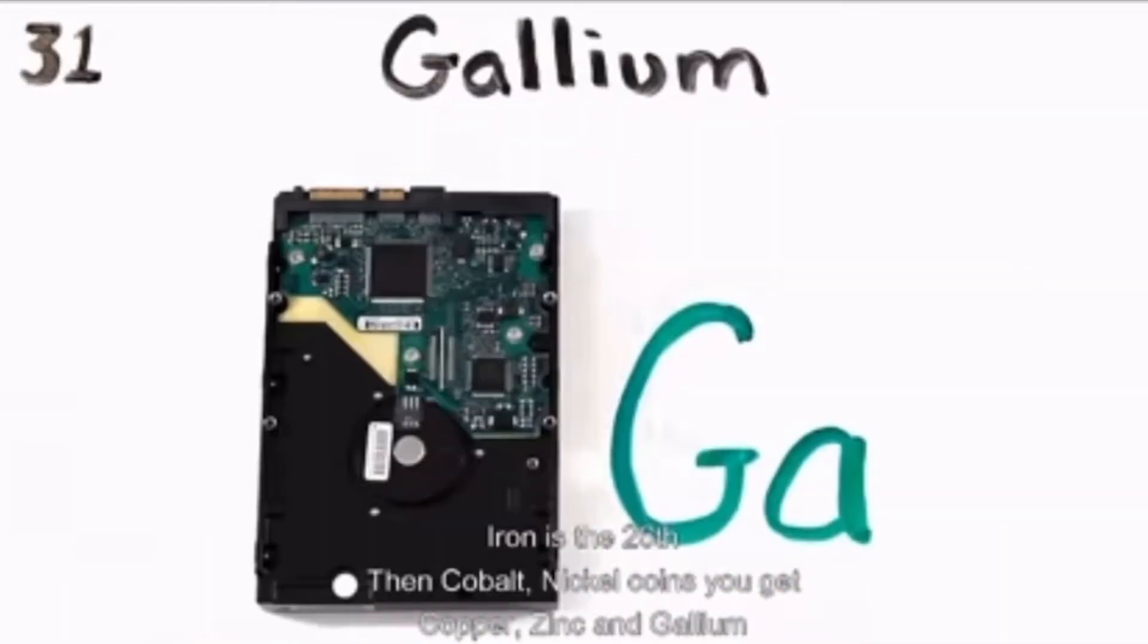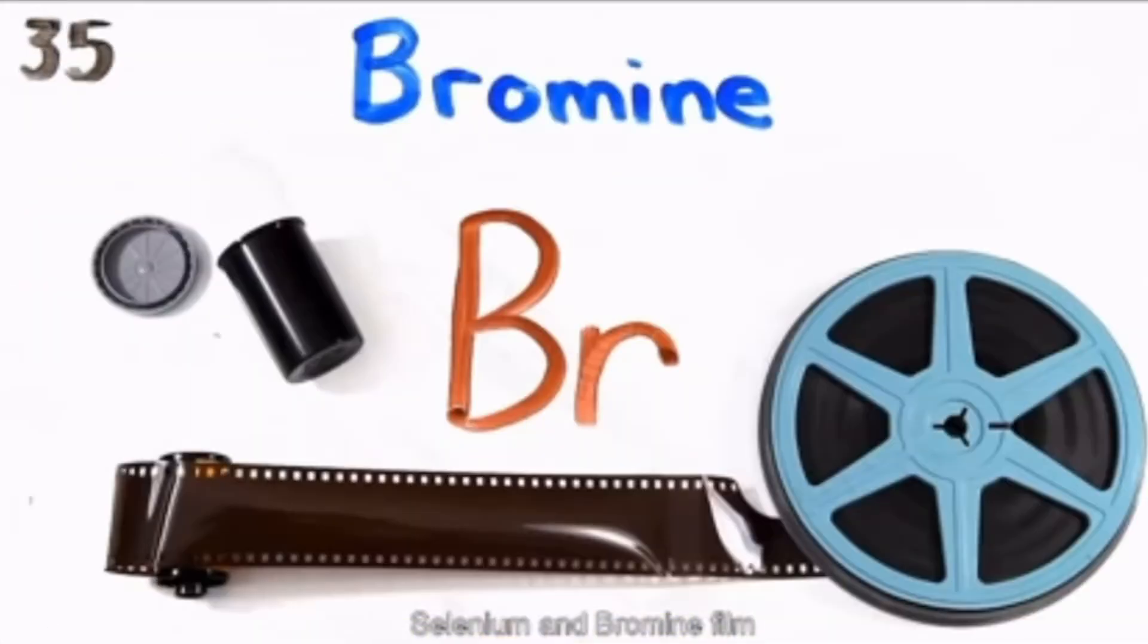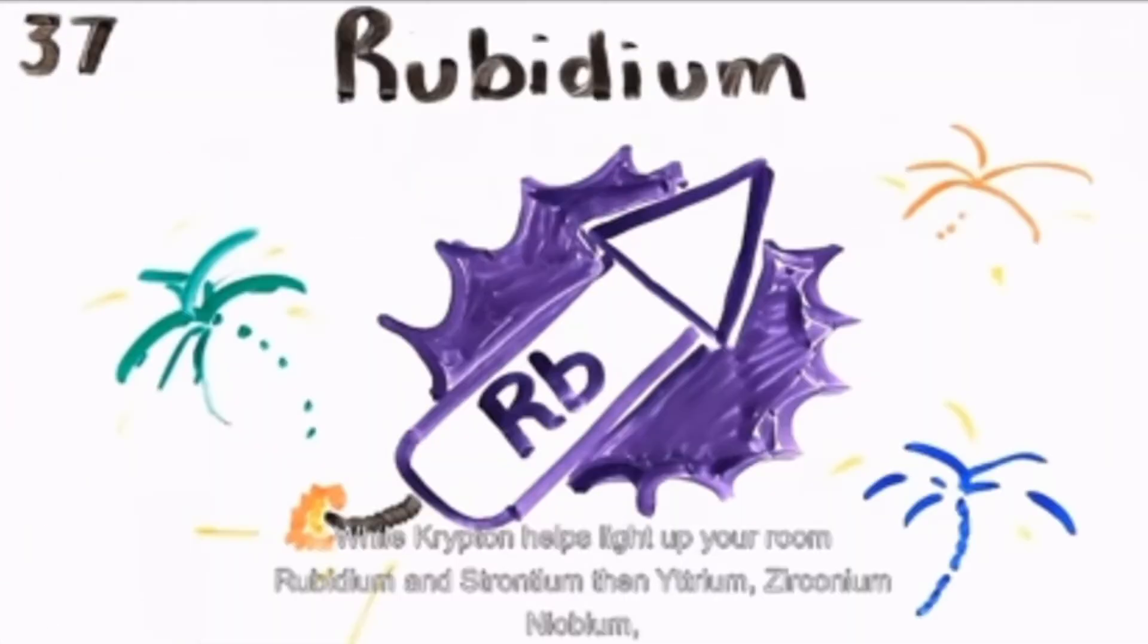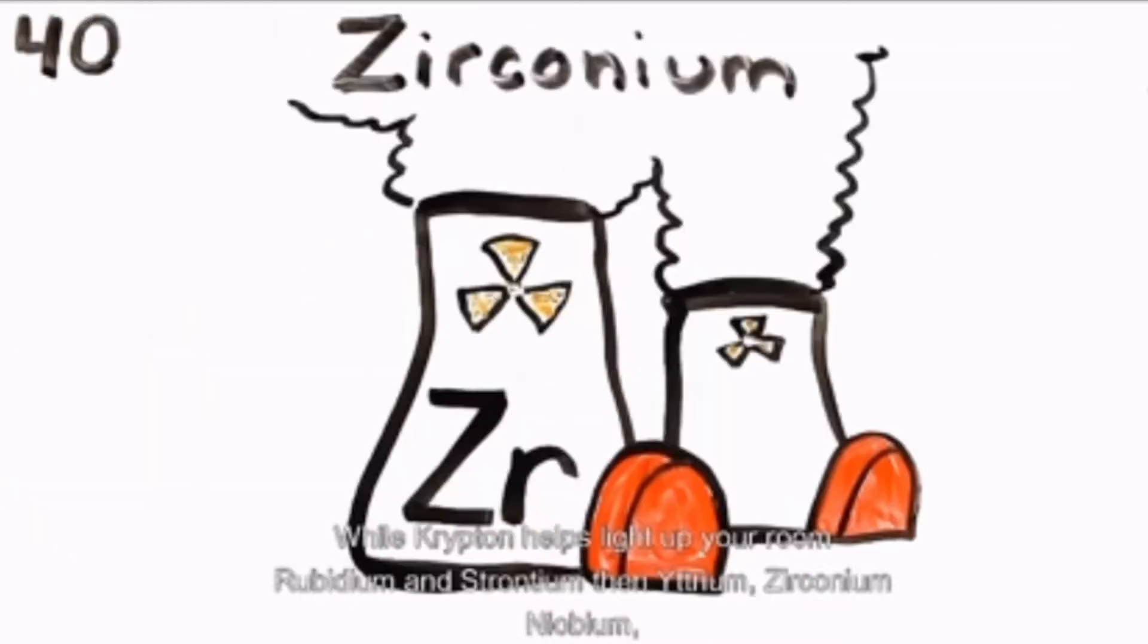Copper, zinc, and gallium, germanium, and arsenic, selenium, and bromine film, while krypton helps light up your room. Rubidium and strontium, then yttrium, zirconium.